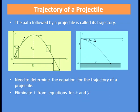Now let us discuss the trajectory of a projectile. Trajectory is the path followed by a projectile. To find out the shape of the trajectory, we have to first determine the equation for the trajectory, and for that we have to eliminate t from the equations for x and y.